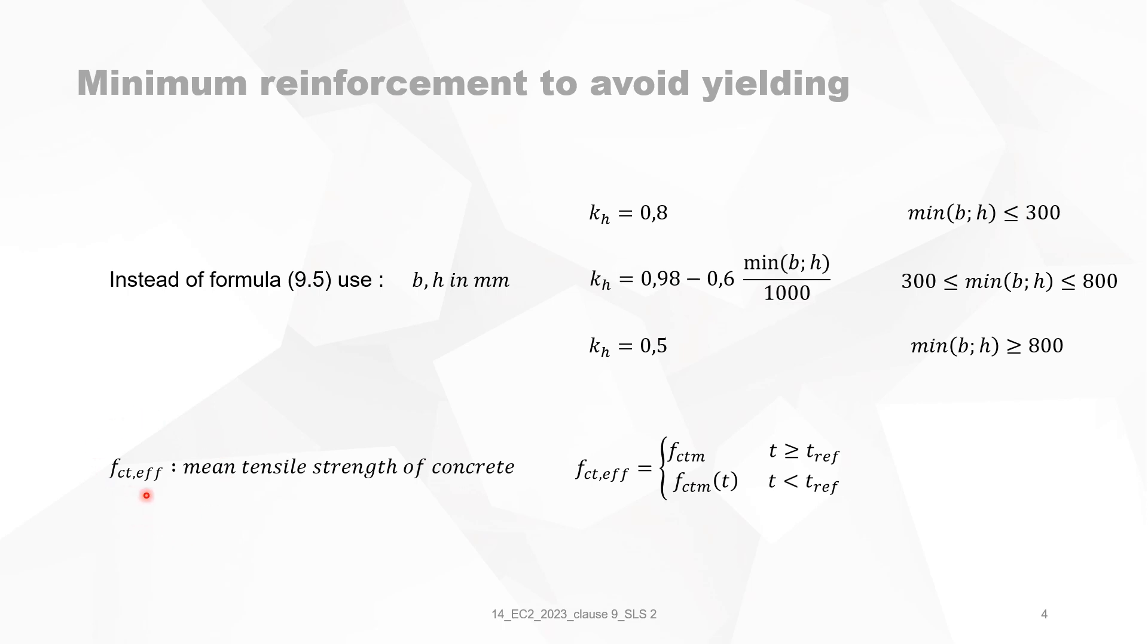f_ct,effective, we will take it equal to f_ctm, which is the mean tensile strength of concrete. And which is the first line, f_ctm, when T is bigger than T_reference. T_reference is in fact the reference time that you have defined f_ck, the characteristic value of the compressive strength of the concrete. So most of the time is 28 days. But the Eurocode 2023 allows you to have concrete reference, which is different than 28 days. So that's why there is a difference like this. So for T, let's say bigger than 28 days, bigger or equal, it's f_ctm.